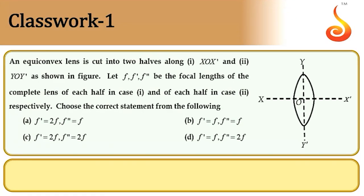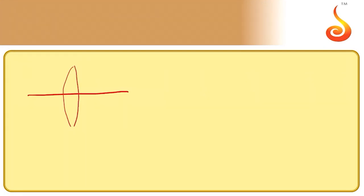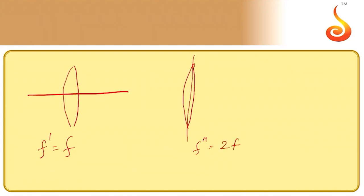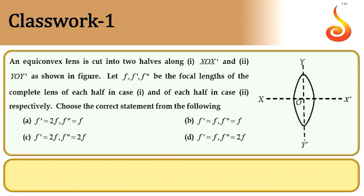Question 1: An equiconvex lens is cut into two halves along XOX' and YOY'. Let F, F', and F'' be the focal lengths of the complete lens and each half in cases 1, 2, and 3. In the horizontal cutting (case 1), F' = F because R1 and R2 do not change. In the vertical cutting (case 2), F'' = 2F because one of R1 or R2 becomes infinity. Thus F' = F while F'' = 2F. D is the correct choice.